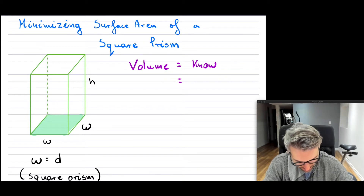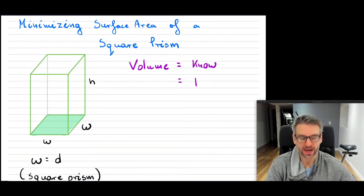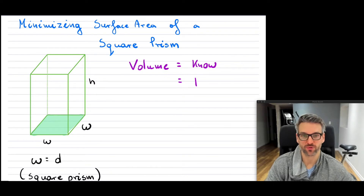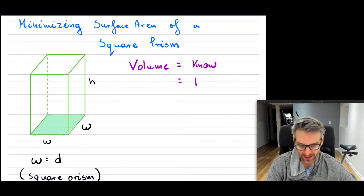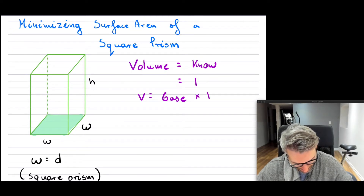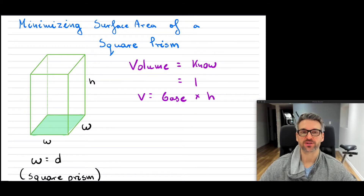Imagine we know the volume. For simplicity, I'm going to let the volume equal one — that could be one meter cubed, one centimeter cubed, one inch cubed, whatever. Now for any prism, the volume is the base multiplied by the height. I'll put a link above if you've forgotten the volume of a prism.